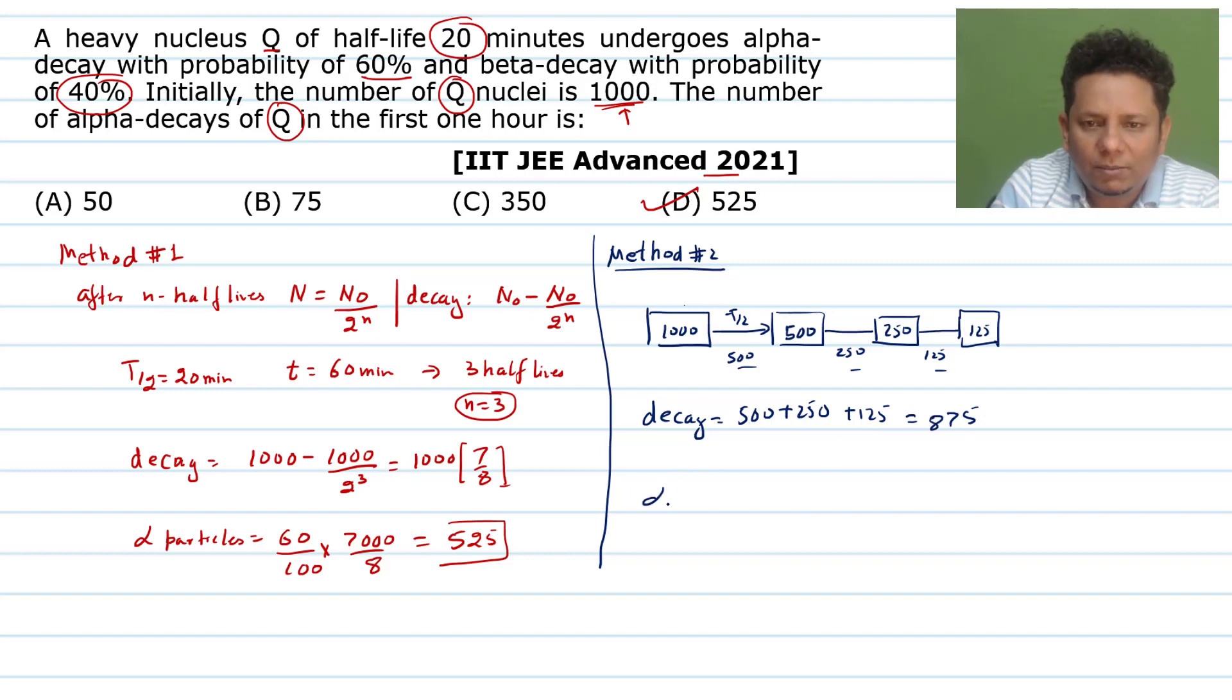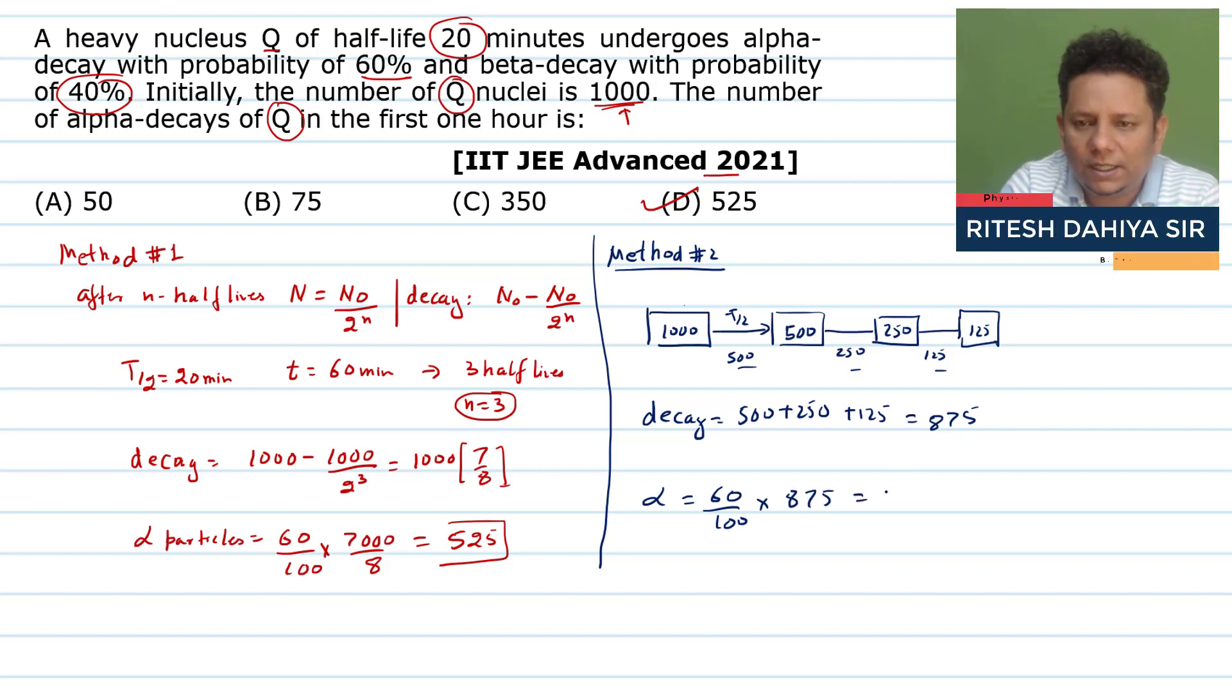Now alpha particles, what is their probability? That will be equal to 60 divided by 100, 60 percent multiplied by 875. When you calculate this, this value will again be 525. So that means option D, 525, that will be the correct answer.